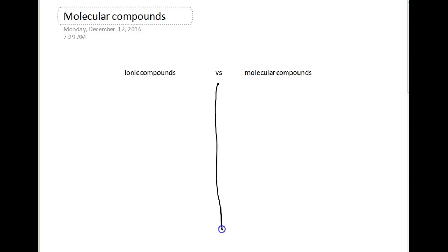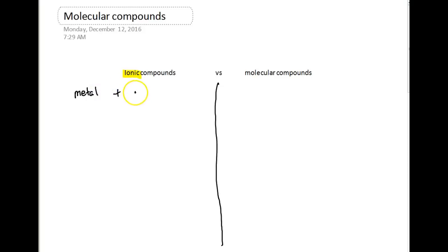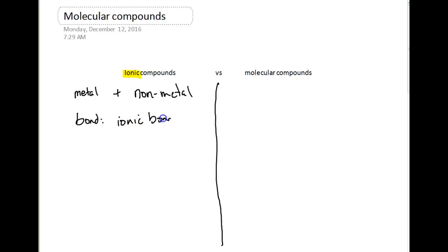I'm going to draw a line right down here. We're going to split this: ionic versus a molecular compound. As we remember from our last unit, we talked about ionic compounds. And we said to identify an ionic compound, we are looking for a compound that has a metal in it, down on the left-hand side of the periodic table, and an element that is a non-metal. And sometimes we have more than one non-metal in those polyatomics that we talked about. The type of bonds formed here we call ionic, and those ionic bonds are formed usually from opposite charges.